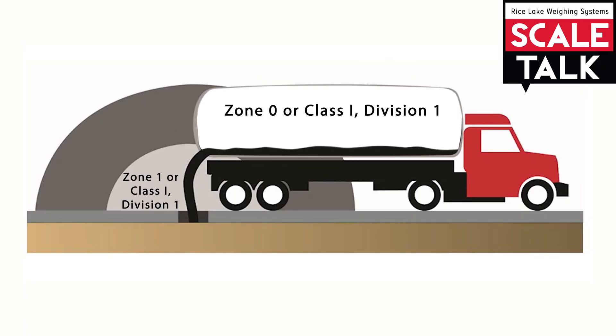Outside the truck in the lighter gray area we have zone 1 division 1. This is where it can get a little tricky, because this is a zone 1 area in Europe and Asia, but it's still considered class 1 division 1 in North America with the same protection required as the zone 0 equivalent. So depending on your location, the required protection method might be different. In North America it would require the highest level of protection, the same as inside the tanker, but other parts of the world are not quite as strict as this is one level down for maximum protection. This area is typically where a load cell or indicator would be mounted.